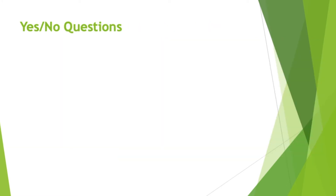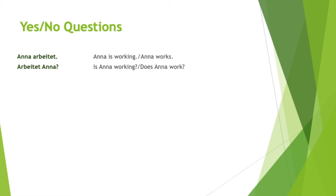Let's start with yes/no questions. You already know about those. Basically you just invert the subject and the conjugated verb of a sentence. Let's say you have the sentence 'Anna arbeitet', which means Anna is working or Anna works. How do you make that into a question? Just have Anna the subject and arbeitet the conjugated verb switch places: Arbeitet Anna?